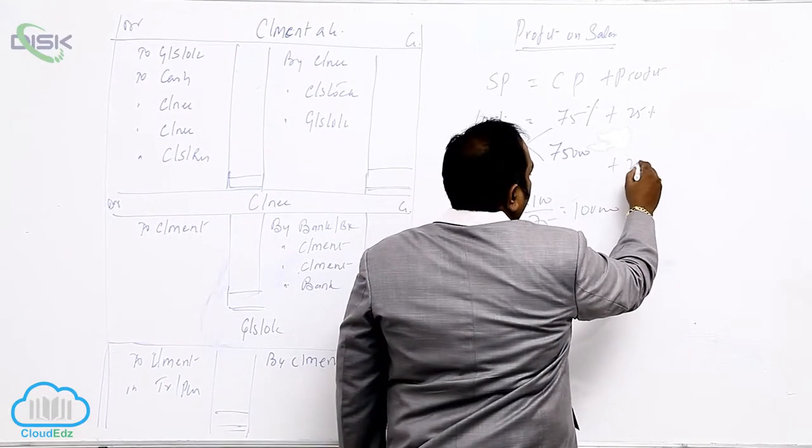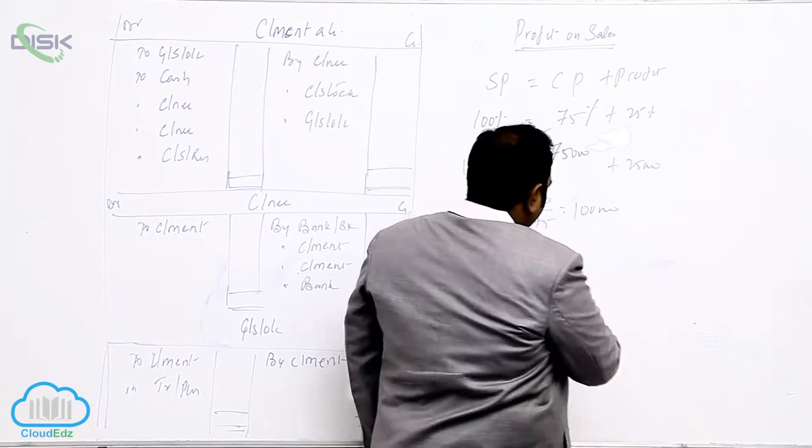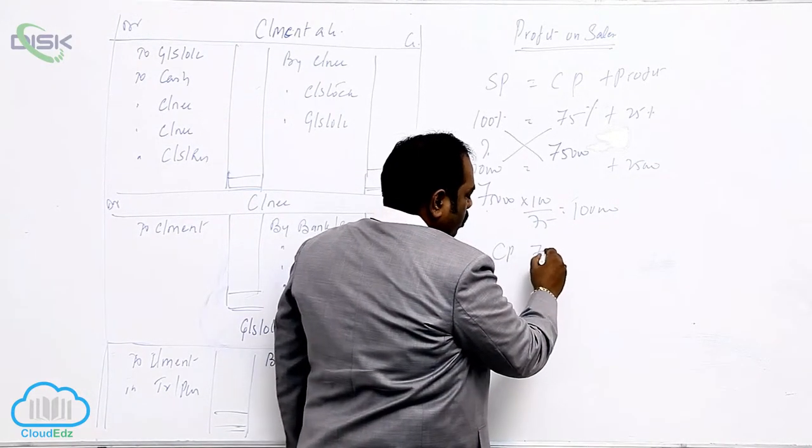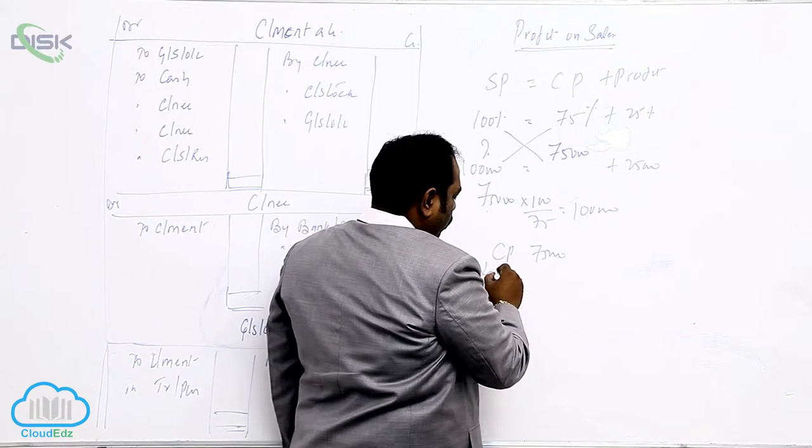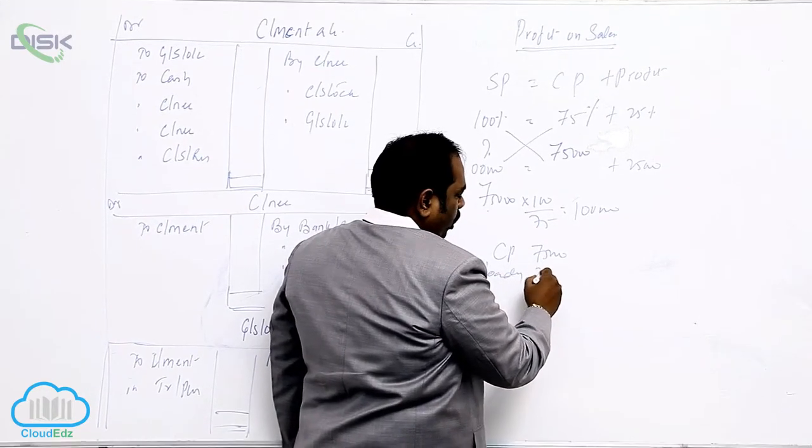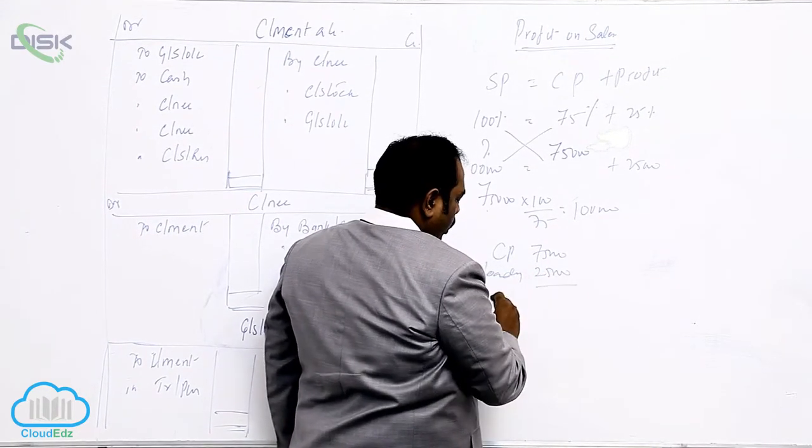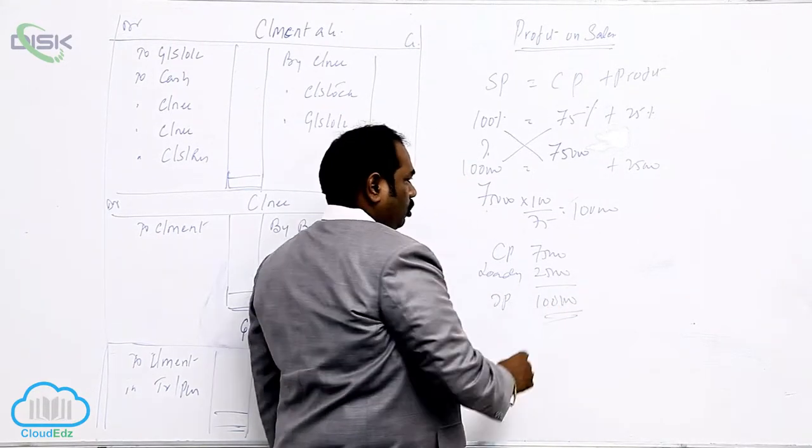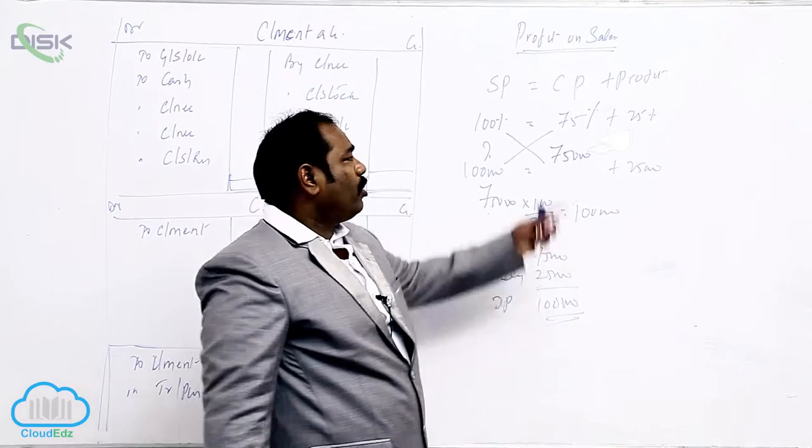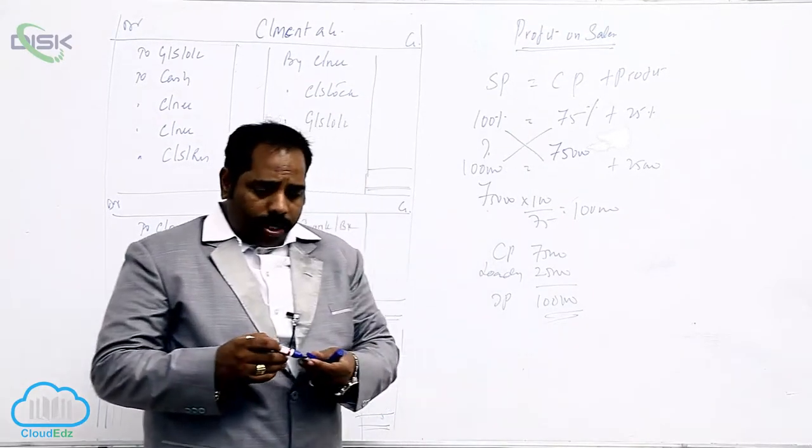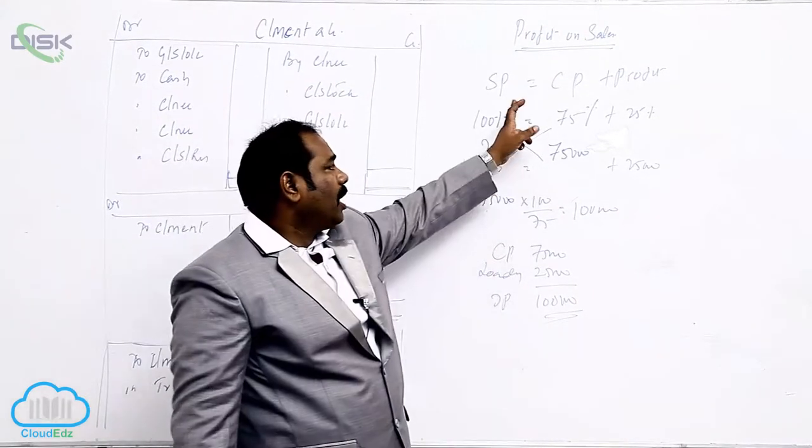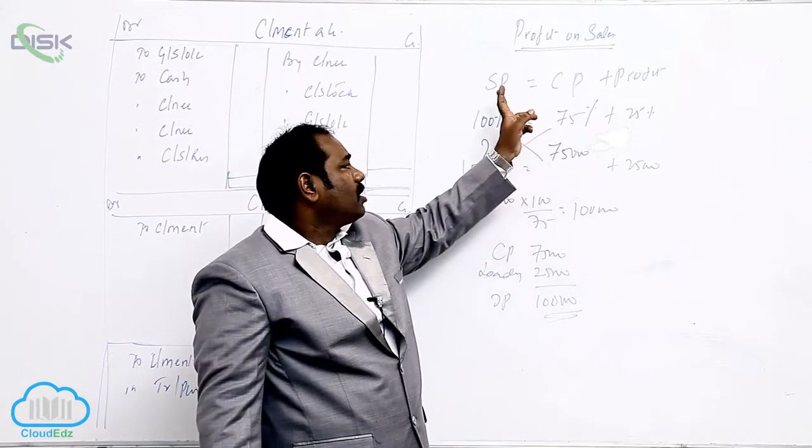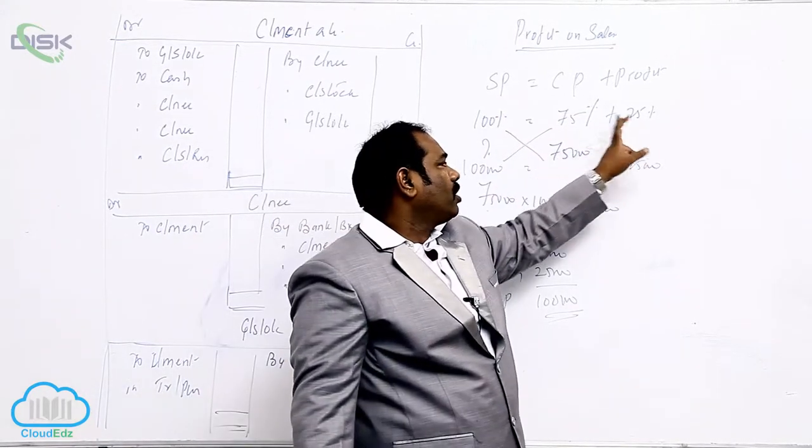So what is the profit? 25,000 is the profit. So cost price is 75,000. Loading, 25,000. Invoice price is 1 lakh. So when you should use this equation? Whenever he mentions profit on sales. Selling price equals cost price plus profit. Selling price is 100%, profit is 25%, so cost price is 75%.